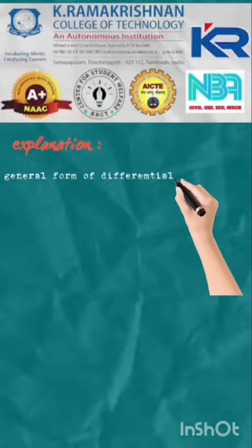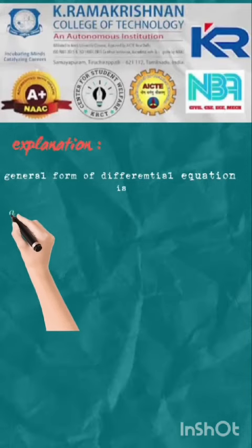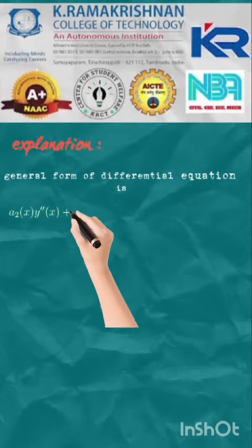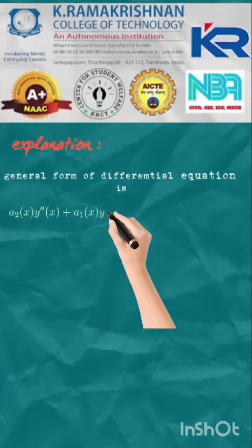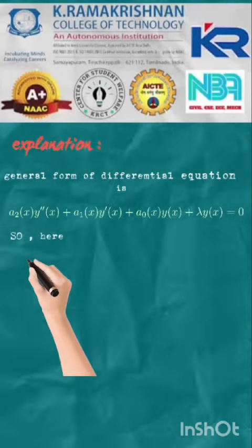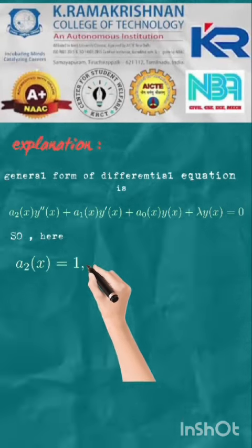Explanation: The general form of differential equation is given by a2 of x into y double dash of x plus a1 of x into y dash of x plus a0 of x into y of x plus lambda y of x is equal to 0.